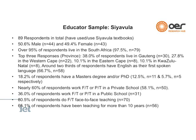For the Siyavula sample: almost 90 respondents, more evenly split between men and women compared with the OpenStax survey. The majority live in South Africa — the top provinces being Western Cape and Gauteng. We also found that almost 60% of our respondents work in a private school setting. Megan, I'll turn it over to you because there's quite a lot of background context that will help us understand the results.